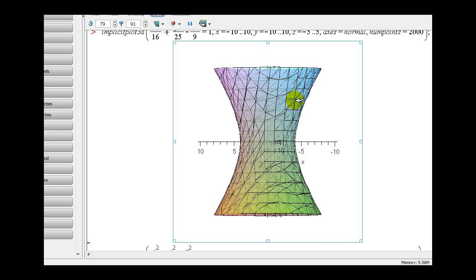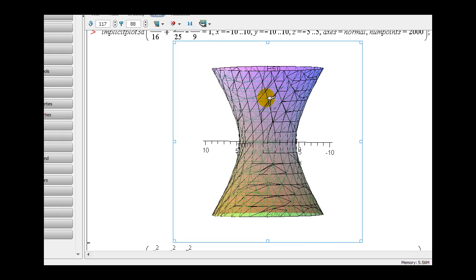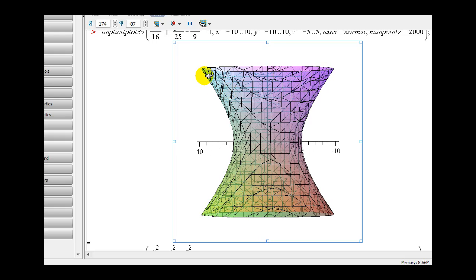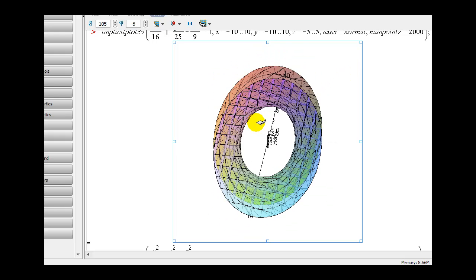And then if we take a look at the yz plane, here. Again you can see the hyperbola opening left and right along the y-axis this time. This is the hyperboloid of one sheet.